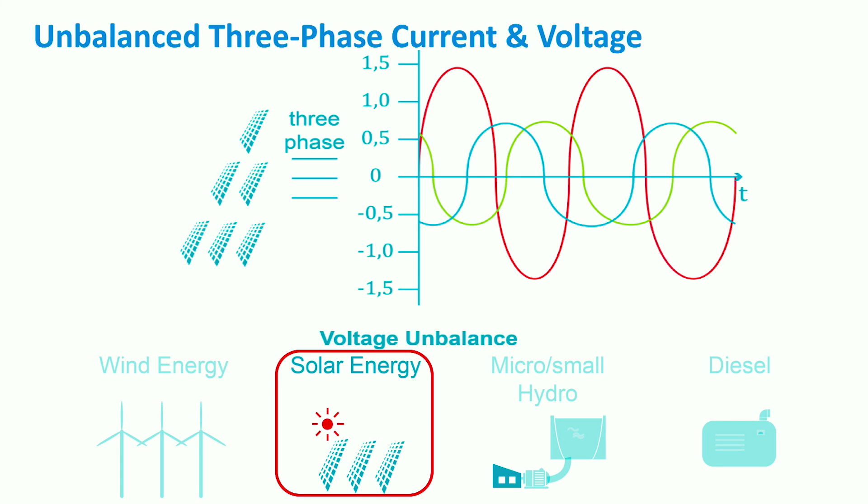According to EN 50160, the maximum voltage unbalance of 2% or occasionally 3% is acceptable for 95% of the time on a weekly basis.